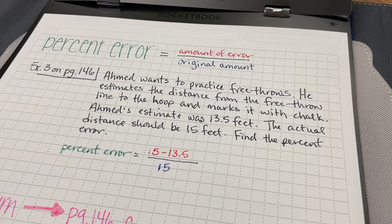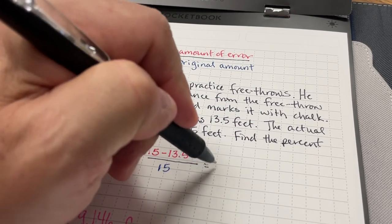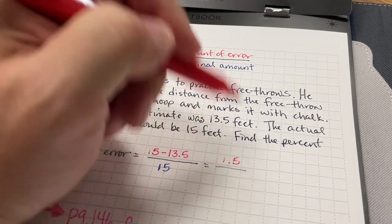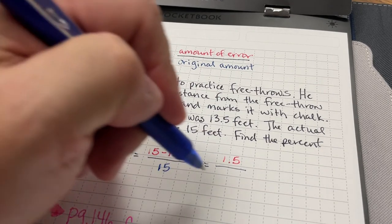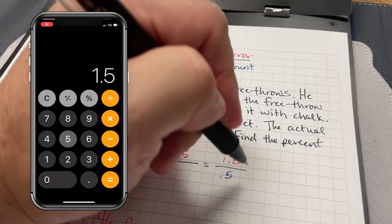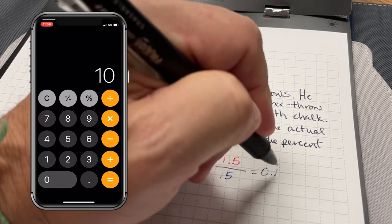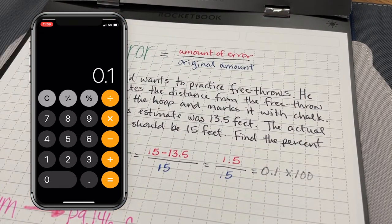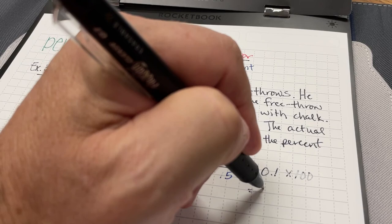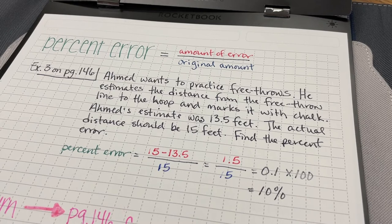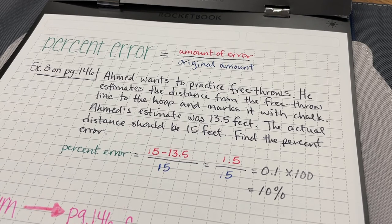So 15 minus 13.5 is going to equal 1.5 feet over the actual distance, which was 15 feet. And then 1.5 divided by 15 is going to equal 0.1. If I multiply this by 100, this will give me my percent error. And so my percent error is 10%. So that just means his estimate was off by 10% of the actual distance from the free throw line to the basketball hoop.